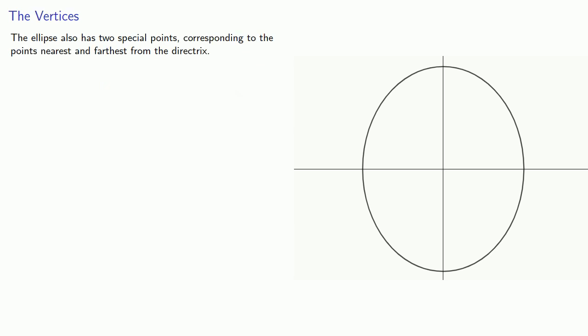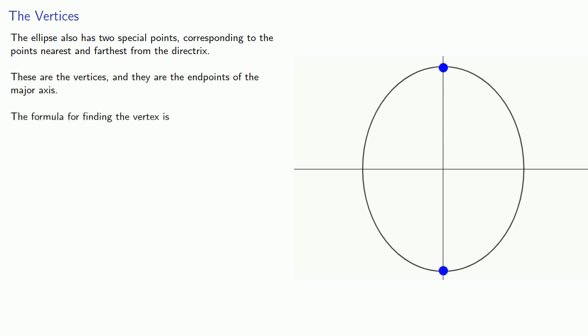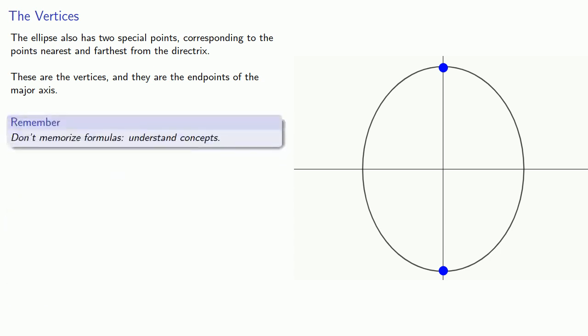The ellipse also has two special points corresponding to the points nearest and farthest from the directrix. These are called the vertices, and they correspond to the endpoints of the major axis. And the formula for finding the vertices — well, remember, don't memorize formulas, understand concepts. If we know where the endpoints of the major axis are, we know where the vertices are.